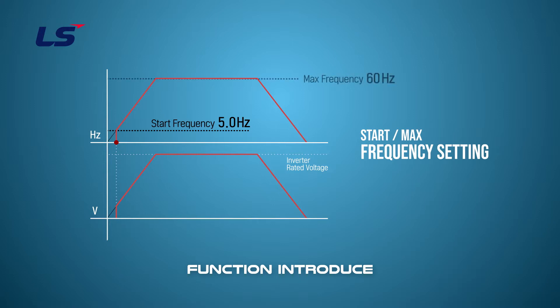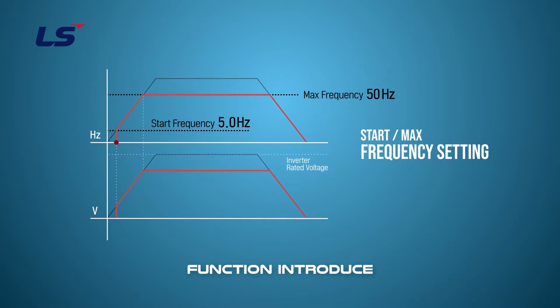The maximum frequency is the upper frequency limit value that the drive can output, and is the reference frequency for the acceleration and deceleration time based on the factory default. Use this to limit frequency according to load characteristics and motor specification applied.